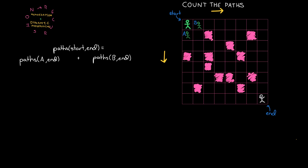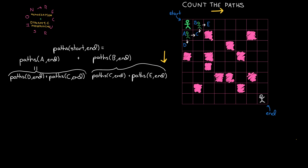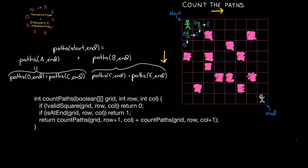Person A has to go either down or to the right again, same with position B. So the number of paths from A to the end can be broken down into C and D — it's the number of paths from C to the end plus the number of paths from D to the end. Same thing with B — it's the number of paths from C to the end plus the number of paths from E to the end. This recursion stops when we have a definitive answer, and that comes when we're actually at the end. The number of paths from the end to the end is just one — you stand exactly where you are. So that forms our recursion base cases.